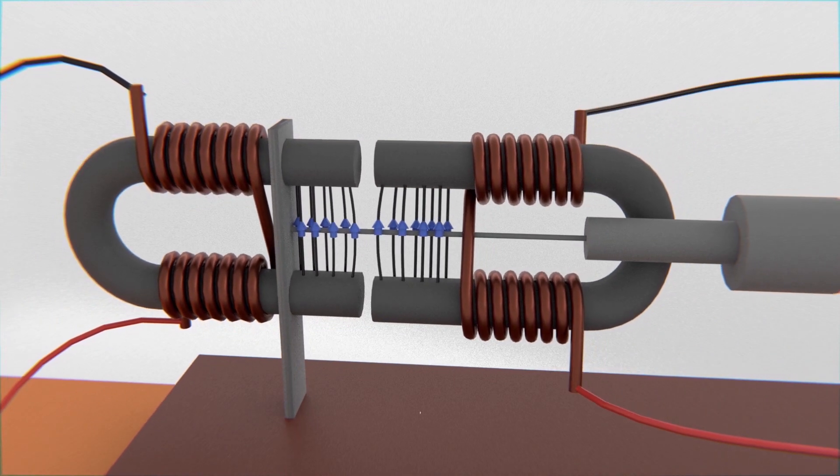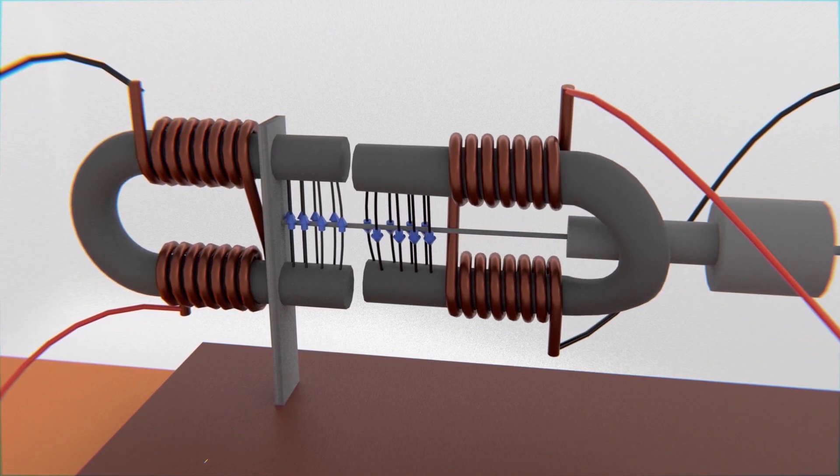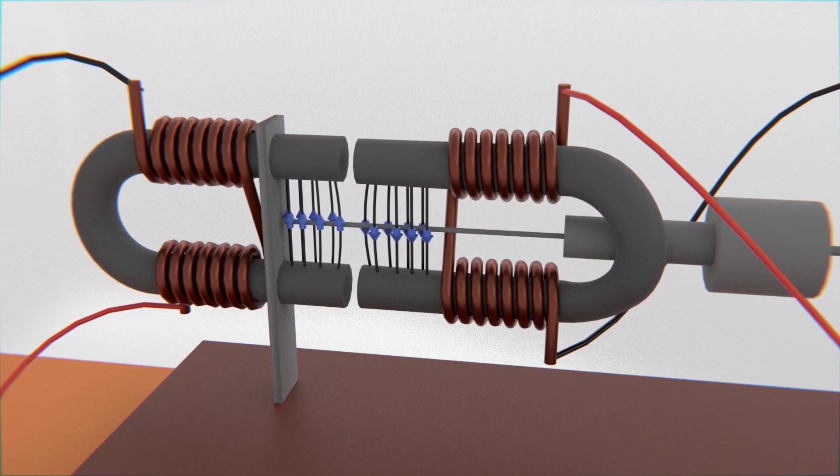Otherwise, if the poles were equal, this would repel and would be attracted by the opposite end of the fixed magnet, until getting back in a static position.